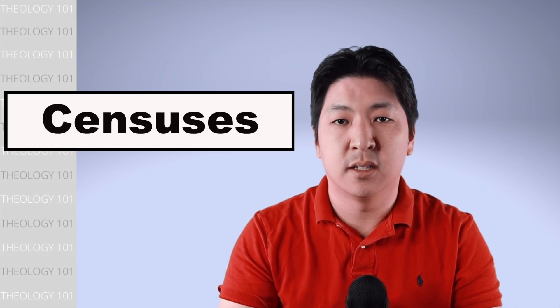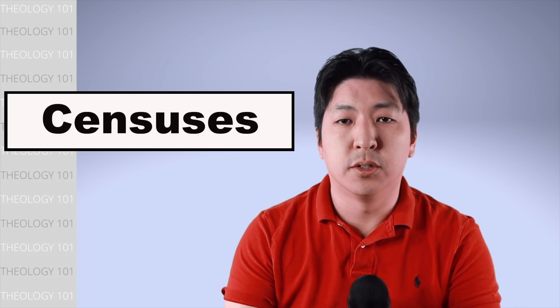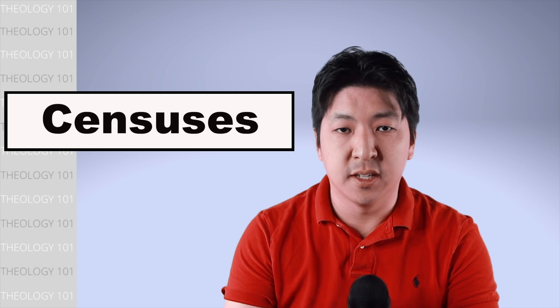Now there are two things that help structure this book. The first thing that structures this book are the censuses. The reason why this book is called Numbers is because of the different censuses listed. The censuses are important because they provide a structure to the narratives that happen between them.